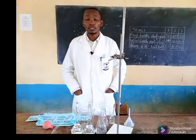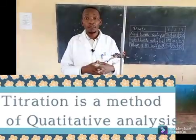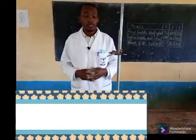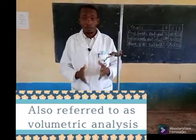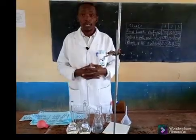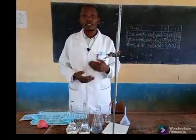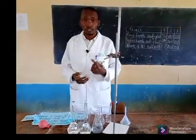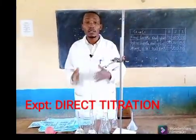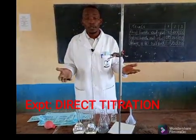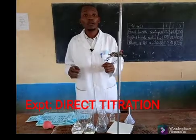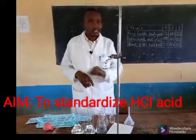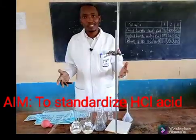You are asking yourself: what is titration? Titration is a method of quantitative analysis, otherwise called volumetric analysis. Why? Because we use volumes of two solutions. One of the solutions is standard — meaning it is of a known concentration. The other one, the concentration is unknown. Therefore we are going to use this process to standardize the solution whose concentration is not known. That is the objective of this experiment.